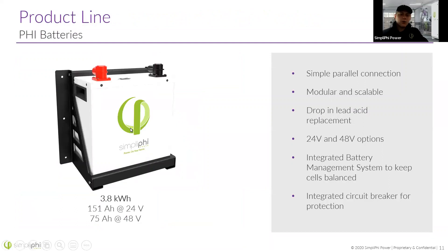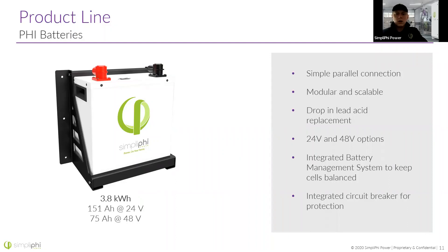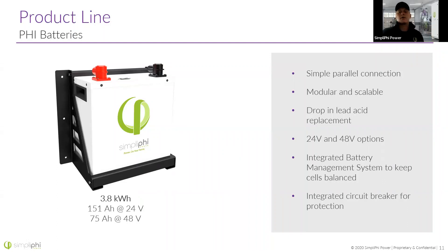We make a 3.8 kilowatt-hour battery that comes in both 24 and 48 volts. It is a parallel connection only — do not buy a 24-volt battery thinking you're going to series-connect them into a 48-volt bank; just buy the 48-volt battery and connect them in parallel. These are really infinitely scalable. In a mobile application you're not going to need 100 batteries, but in a residential application this battery has no limitation as to how many you can parallel — we've seen systems of over 100 batteries in one bank.